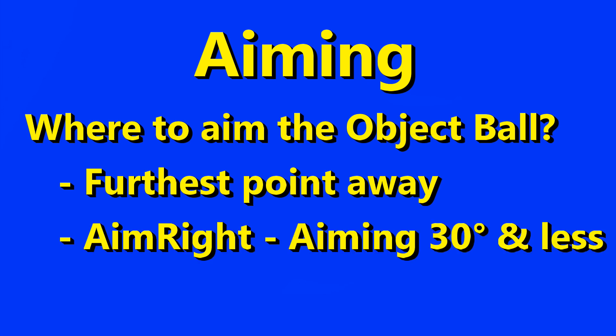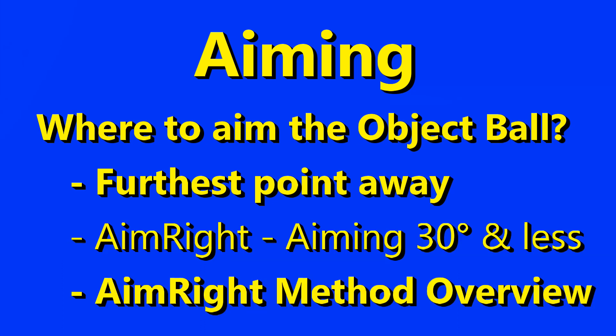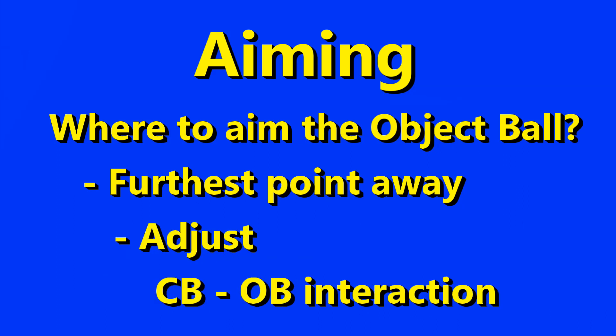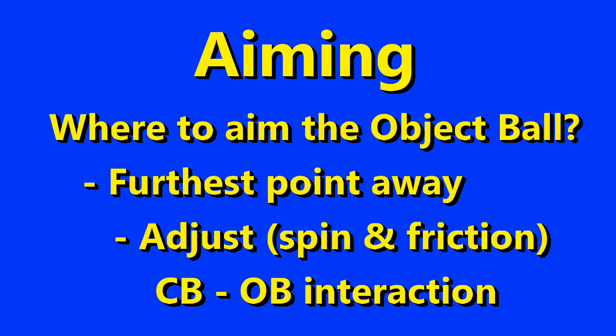I show that point in my AimRight aiming 30 degrees and less video and in the AimRight method overview video. Then that point is modified slightly based on the interaction of the cue ball with the object ball — spin and friction are the issues.